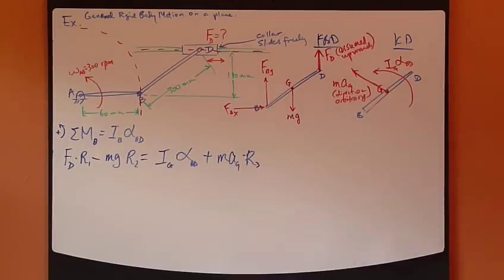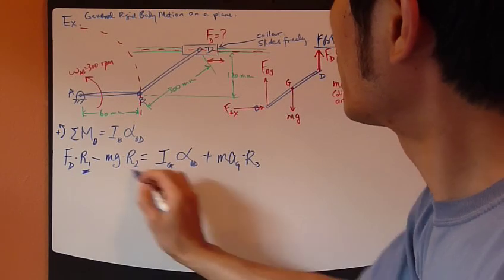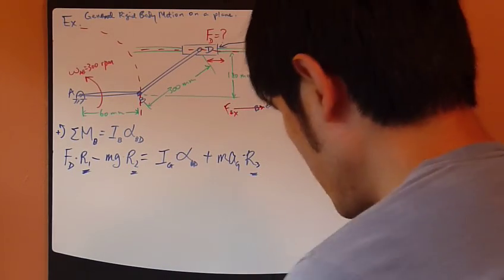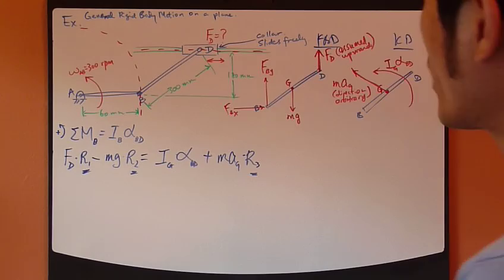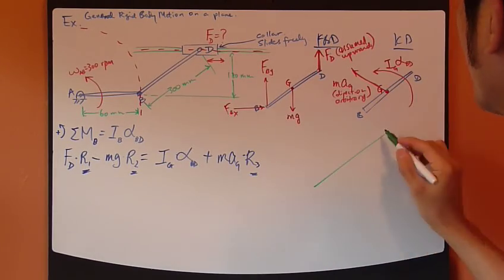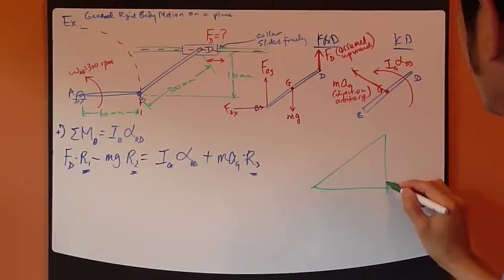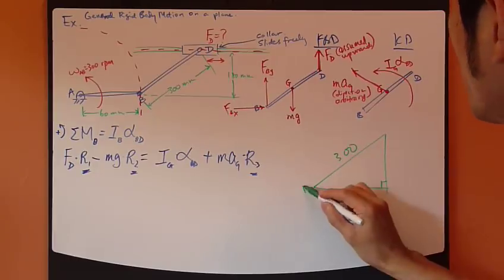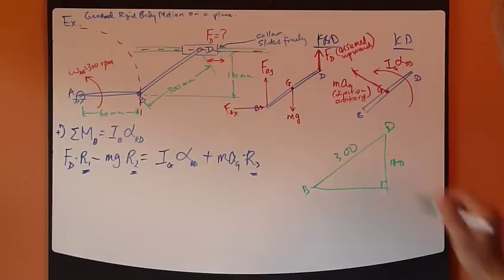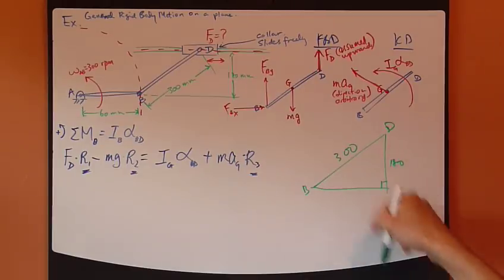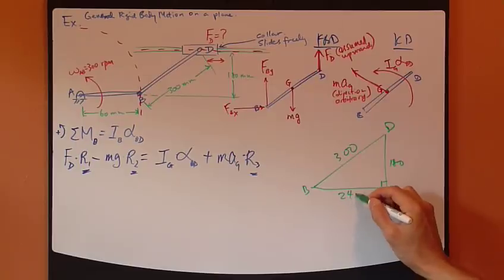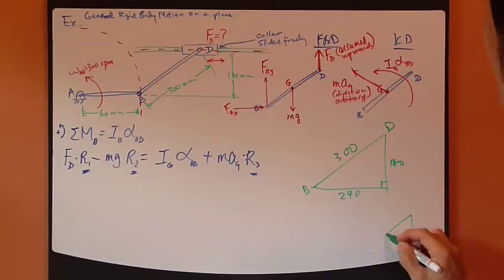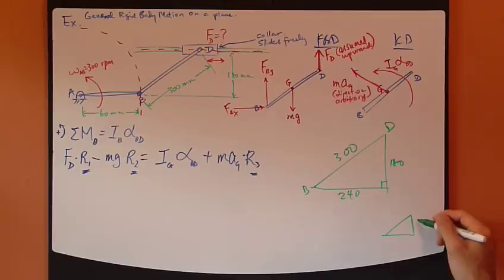So, let's try to figure out what R1, R2, and R3 are. To figure out the distance, I need to draw a triangle. Draw this triangle at this instant right here. So, this is 300, this is point B, point D, this is 180 right here, and this is a right triangle. So, we can easily figure out that this is 240, and this is actually, we can divide each side by 60, this is 3, 4, 5. 3, 4, 5 triangle.